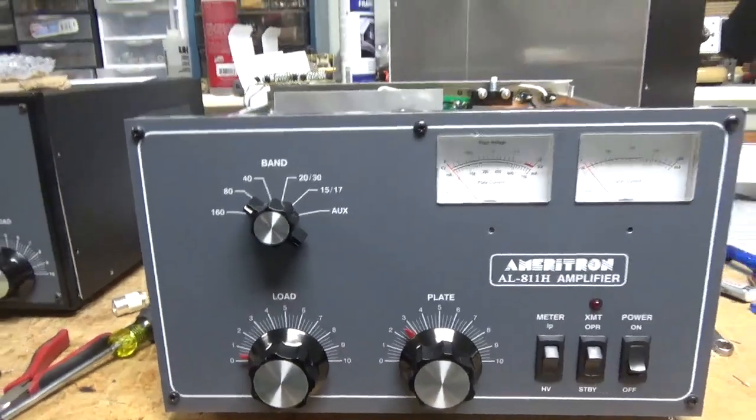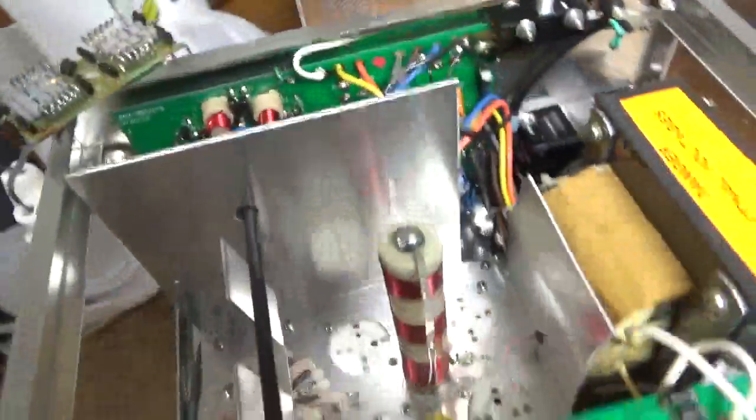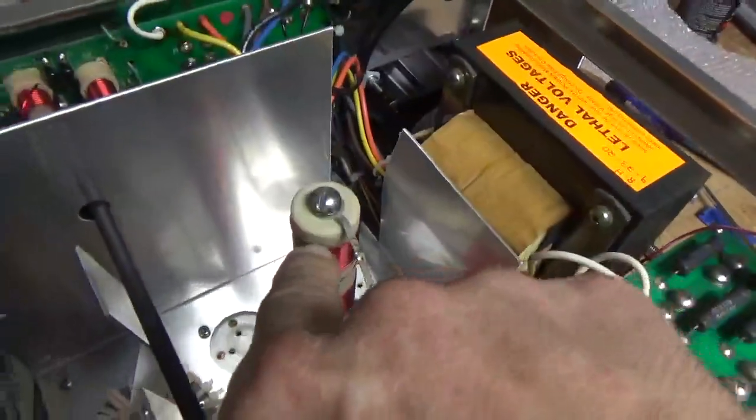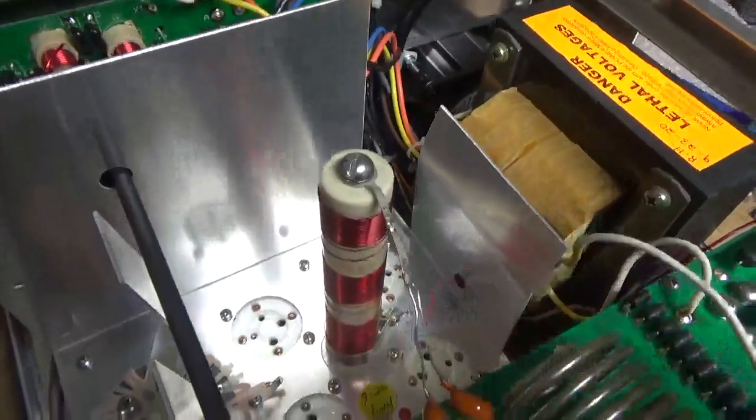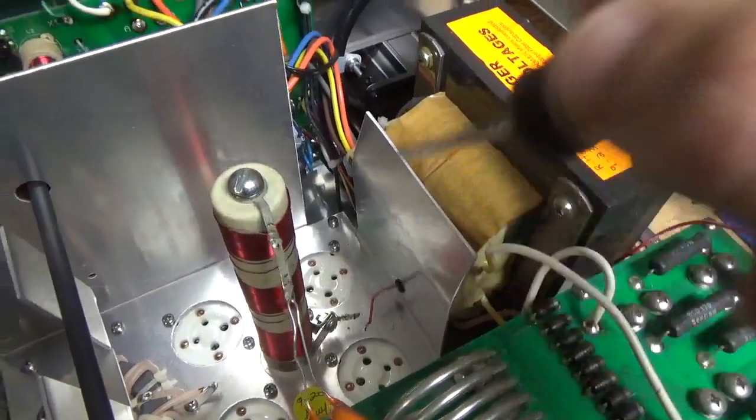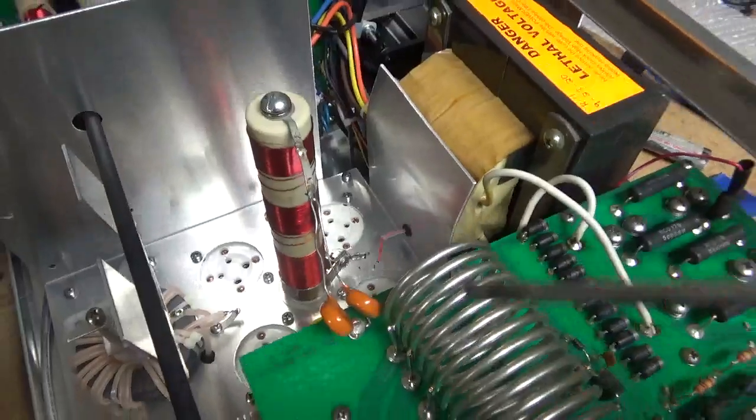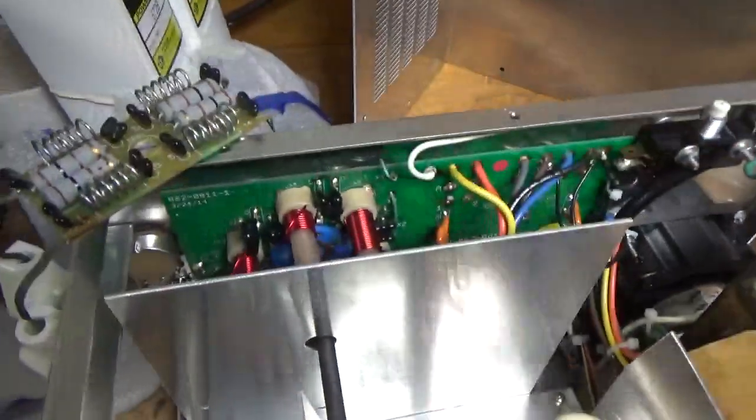I already started taking it apart. I'm like, oh no, I forgot to do a video. So the windings were coming undone. I ended up re-gluing them. Grab a pointer and started the base of the plate choke. Be positive. And so I took the parasitic board out.